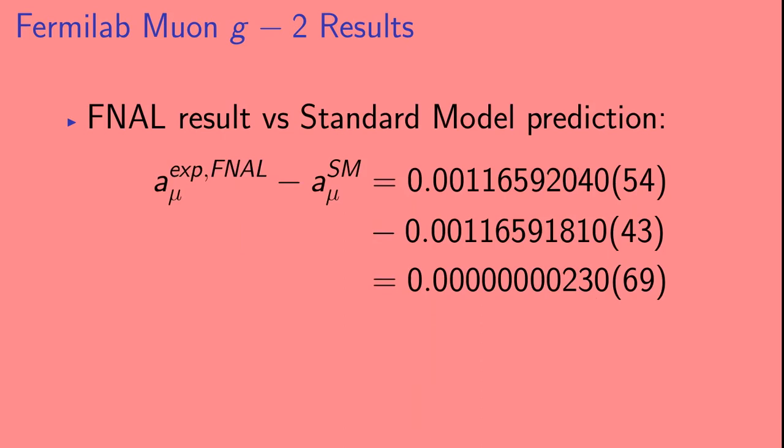Now, it's interesting to compare this new result to the standard model prediction. The difference between the Fermilab result and the standard model prediction is a bit smaller than the difference between the Brookhaven result and the standard model, with a smaller uncertainty. The difference comes out to be 3.3 sigma.